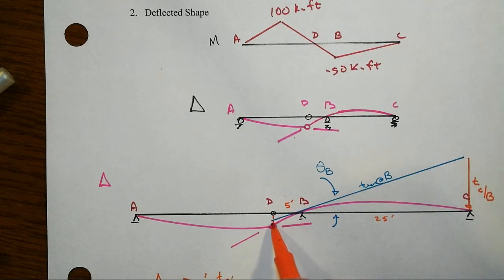And then we can see that we've got this additional little curvature piece, so plus the tangential deviation that happens at D relative to a tangent that was drawn back at B, which is still the same overall tangent. So we've got two pieces that comprise that displacement.